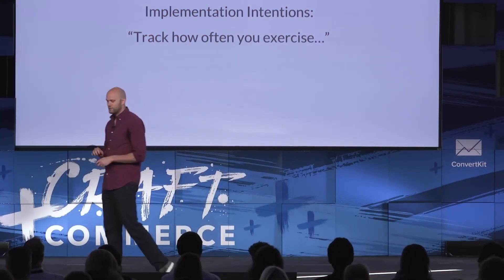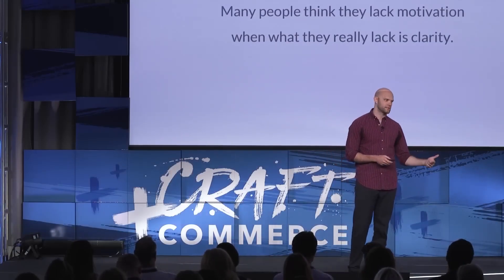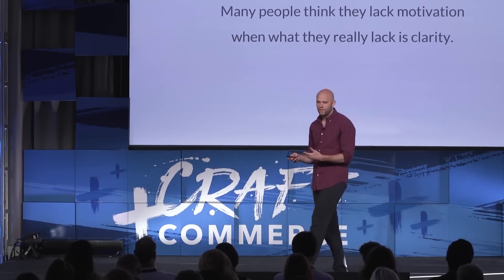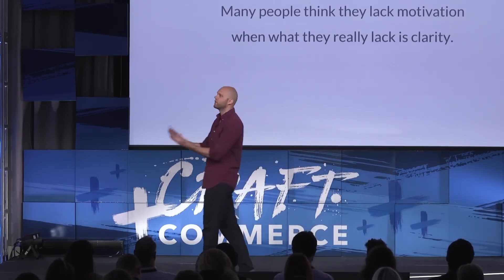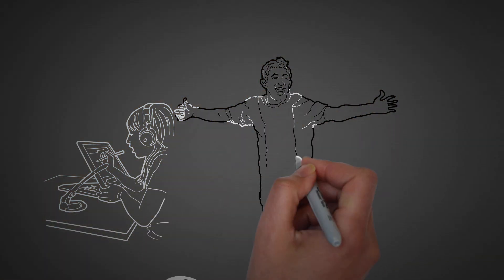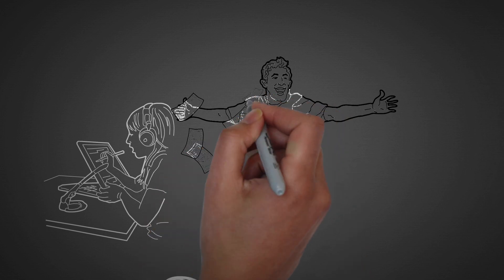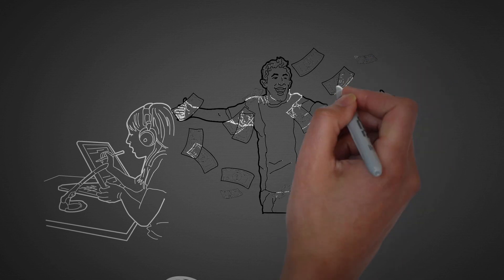One of my favorite strategies is called implementation intentions. Many people think that they lack motivation when what they really lack is clarity. They think that they need to get more motivated, that they need willpower in order to execute on a habit. But in fact, they don't have a plan for it. Instead, you can take the decision-making out of it by explicitly stating when, where, and how. James Clear reveals a secret weapon in Atomic Habits: implementation intentions. Sounds fancy, right? But it's super simple. This method asks you to map out your new habits: when, where, and how.